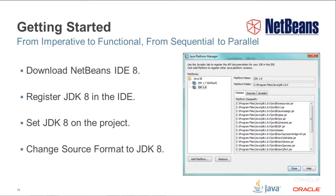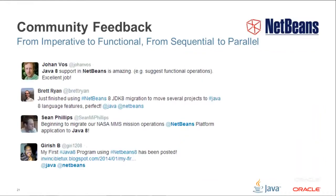Getting started with the tools you have seen in this screencast is easy. Download NetBeans IDE 8. Download JDK 8. Register the JDK in the IDE. Set the JDK on the projects where you want to use it, change the source setting, and then you're ready to upgrade to Java 8. Community feedback on the tools the IDE provides for lambdas, functional operations and method references has been very positive. If you have feedback too, use Twitter or blog about your experiences in leveraging the latest Java 8 features via the IDE's refactoring tools.